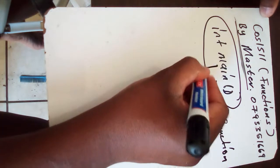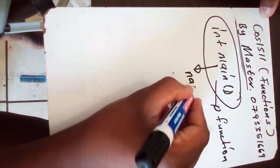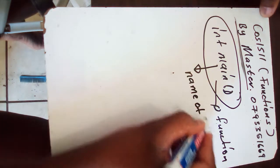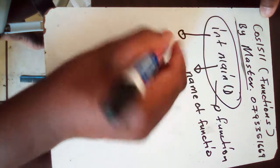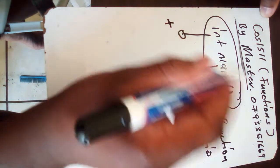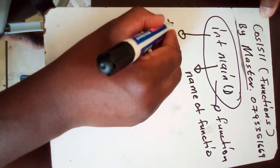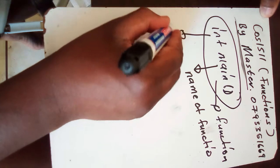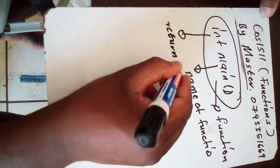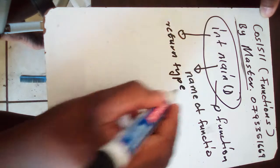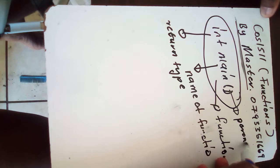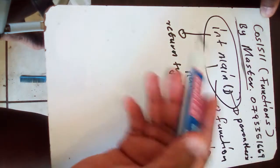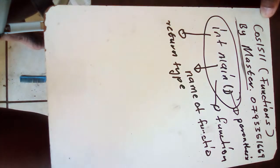The name of this function is main. Main is the name of a function. And int is the return type, so the return type of this function is integer. It's a return type. And this one we call it parenthesis.